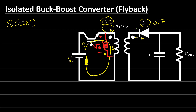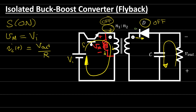When the switch is conducting, we have only one current: the current stored in the core, or the magnetizing inductance current. At this moment, the voltage Vm — the voltage across the inductor — is equal to the input voltage V_in. The output current equals the capacitor current, so Ic equals V_out over R. The input current I_in equals the magnetizing inductance current. So when the switch is conducting, there is nothing on the output or secondary; all current flows through the magnetizing inductance.